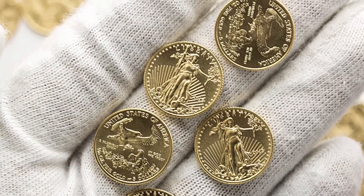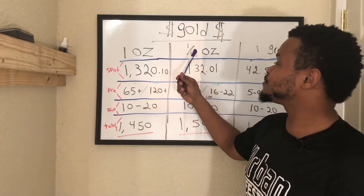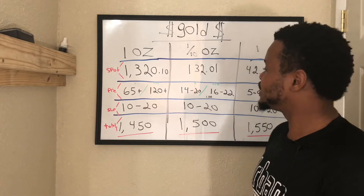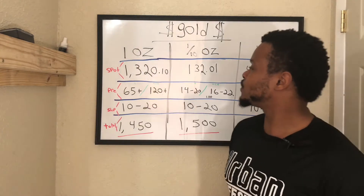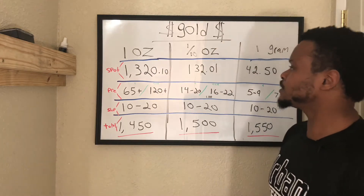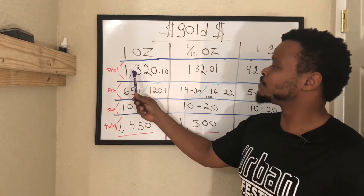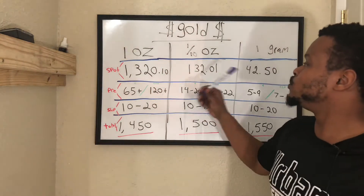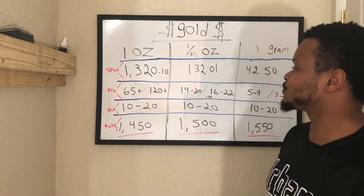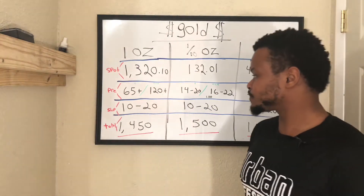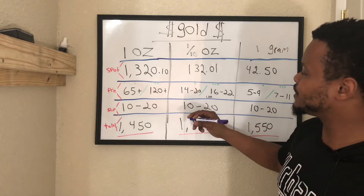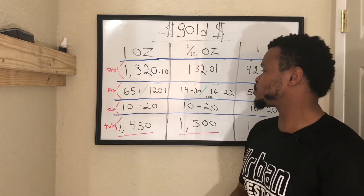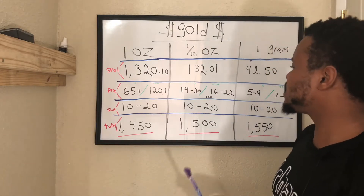Now if we go to one tenth of an ounce, it takes 10 of these to make one ounce. So I based this math on those numbers. If you take $1,320 divided by 10, it gives you $132.01 for the spot price. I checked all the websites again and found that the premium averages between $14 to $20.